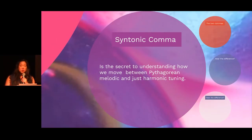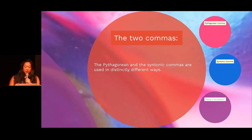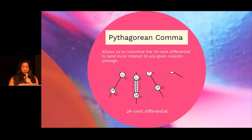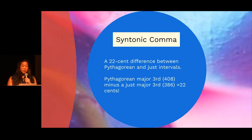The second kind of comma is called the syntonic comma. This is the secret to understanding how we move between Pythagorean melodic tuning and just harmonic tuning. To recap: the Pythagorean and the syntonic commas are used in distinctly different ways. The Pythagorean comma is about the enharmonic notes — the different pitches — the 24-cent differential to any enharmonic note, which will lend more interest to any melodic passage. But the syntonic comma is, in its essence, a 22-cent difference between Pythagorean and just intervals.